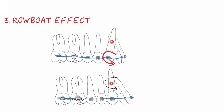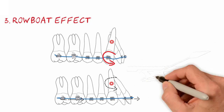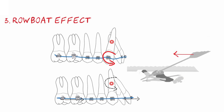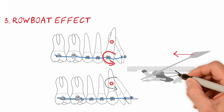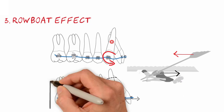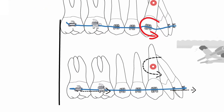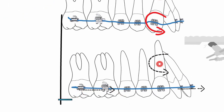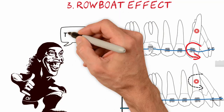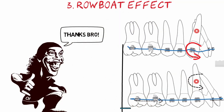Imagine that the apex of the canine root is the tip of the oar. When the oar is pushed back, the boat and all its crew — in this case the canine and the other teeth — are shot forward. This unwanted effect is quite common, and is sometimes referred to as an unexpected loss of anchorage. That is why sometimes a patient starts treatment in a class 1 molar relationship, and it soon turns into a class 2 — you rolled in the wrong direction.